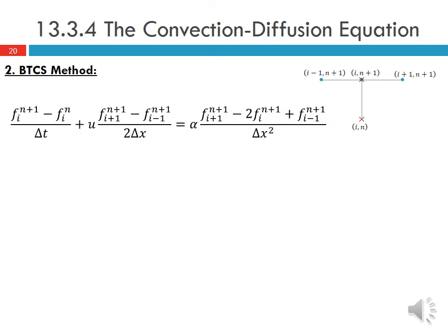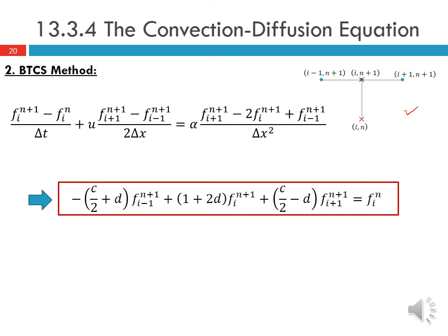We can also look at the Backward Time Centered Space method for the same equation. Using the BTCS stencil and plugging in the finite difference approximations and rearranging, we get the expression shown here, where C is the convection number and D is the diffusion number.